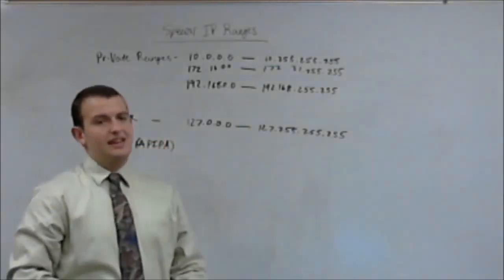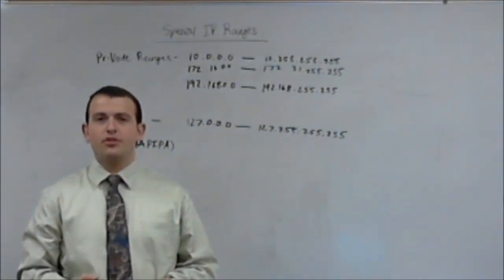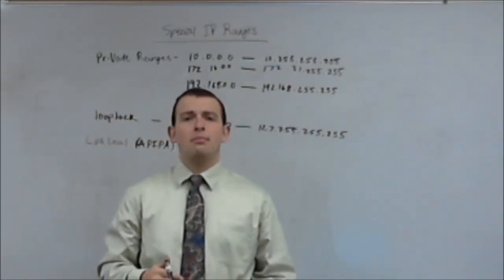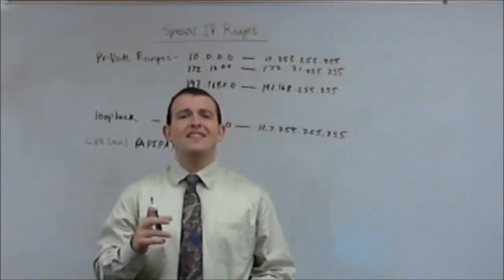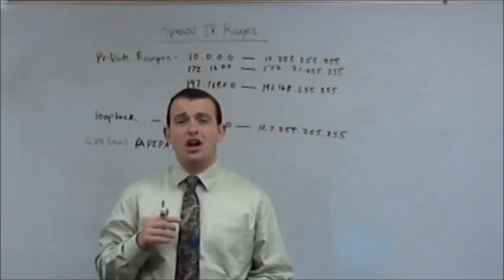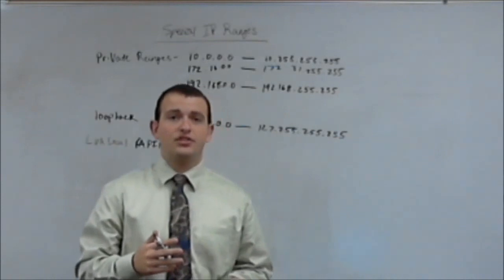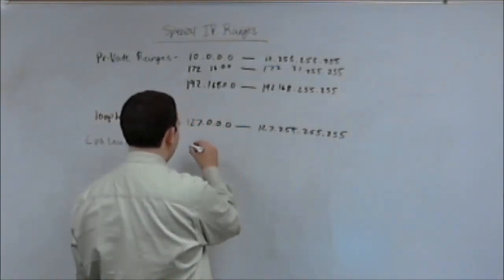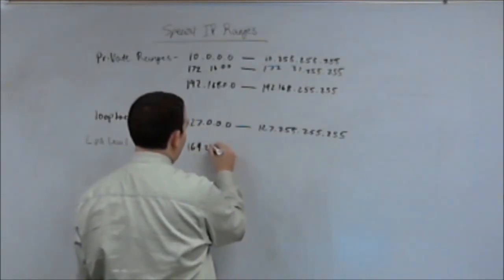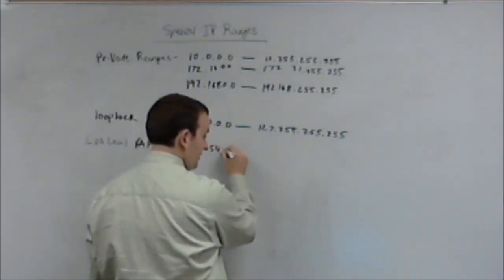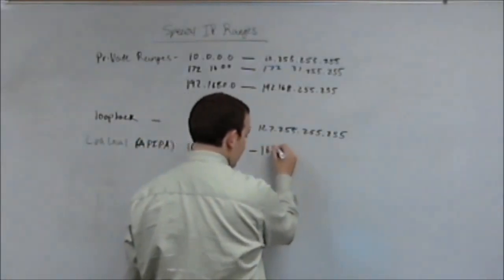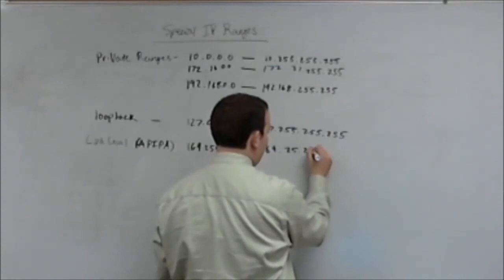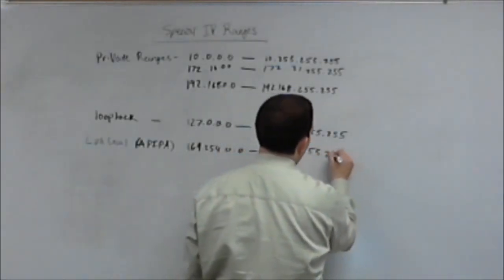APIPA is an important acronym to associate with this link local range. So if you're going to remember this range by anything, remember it by APIPA and remember that it is for hosts that were not able to get an address via DHCP. So this address range is going to be 169.254.0.0 all the way up to 169.254.255.255.